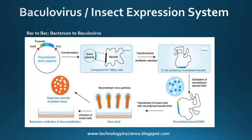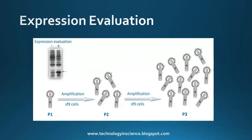The most preferred cell line is SF9. The virus titer can go from 10^6 to 10^8 PFU/mL in subsequent infection cycles. In the slide you can see the expression system results and positive clones showing a band which indicates protein expression.